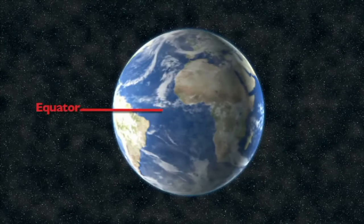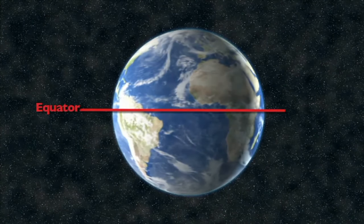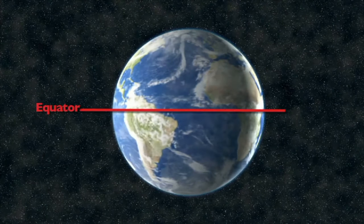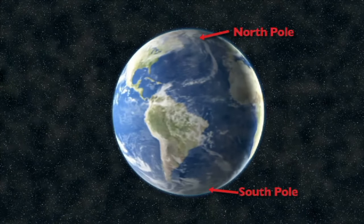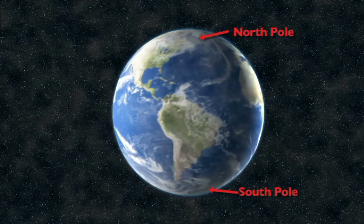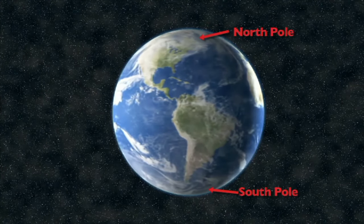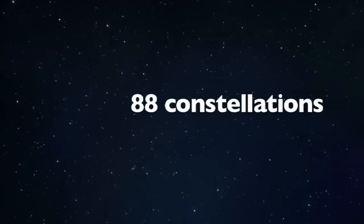If you live on the equator, you can view all the constellations all the time. If you live on the North or South Pole, you can only see one part of the sky. The International Astronomical Union currently identifies 88 constellations.